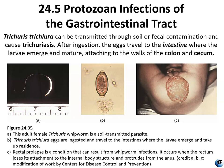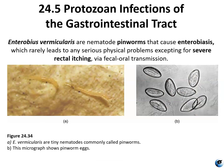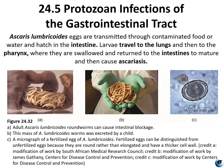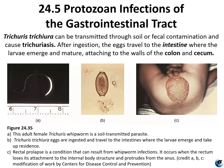Trichuris trichiura is transmitted via soil or fecal contamination. The eggs are ingested and travel to the intestine, where they hatch and develop larvae. The larvae mature and attach to the walls of the colon and cecum, where they continue to reproduce. Figure 24.35 shows an adult whipworm — their common name — which is a soil-transmitted parasite and on the larger scale compared to pinworms. Ascaris helminths are going to be much bigger than whipworms, but whipworms are still a couple of inches long and can be seen with the naked eye.